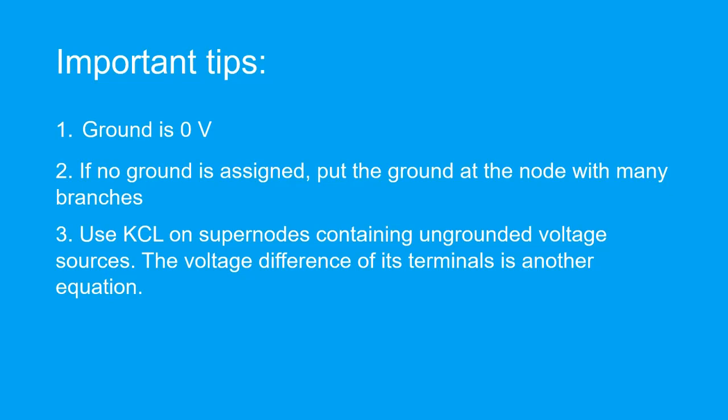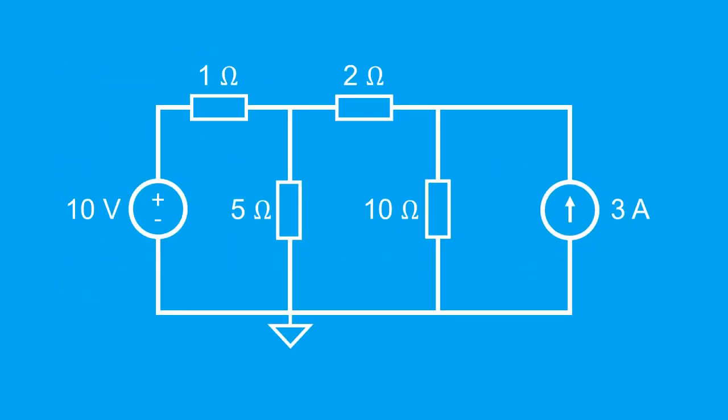This topic is best understood with an example, so let's dive right in. Let's solve for the node voltages in this circuit. The first step is to identify the unknown nodes. Recall that a node is an interconnection of two or more wires. So it's clear these two are nodes. At this corner, this is a node too, because it is an interconnection of two wires — this wire and this wire.